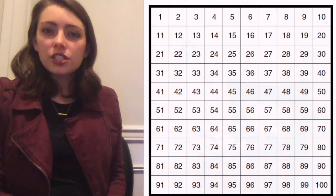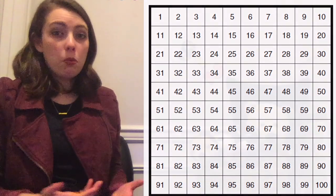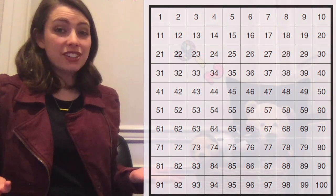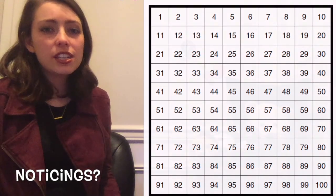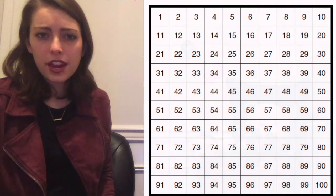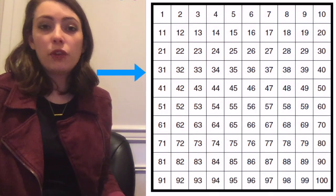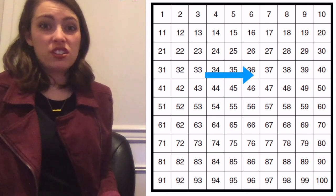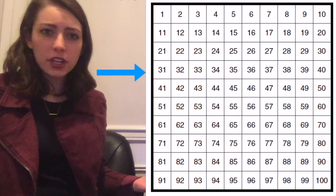We don't have that kind of time here. So let's begin using this new tool. I want you to look at this 100 chart and tell me, what do you notice? What patterns do you see? What are you noticing about how these numbers are arranged? What are you noticing when we move right or down or left or up?